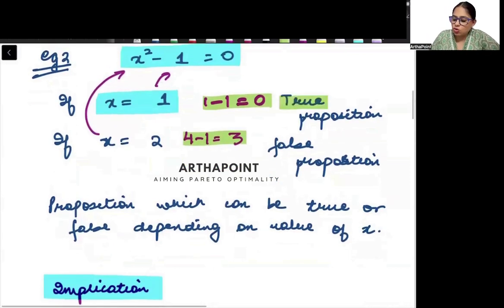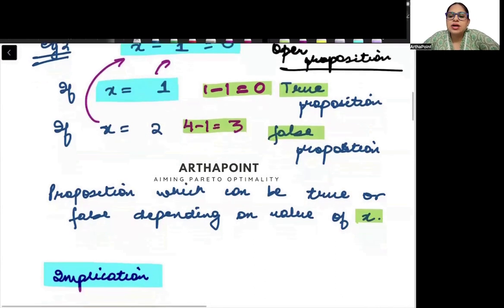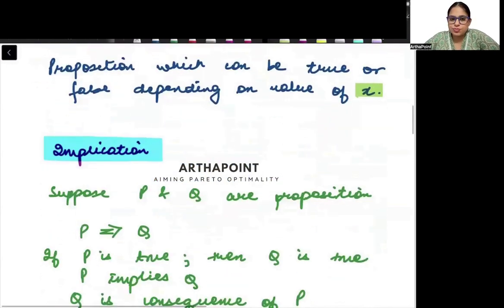The same statement is sometimes true or sometimes false depending on the value of x. Aisi statements, jo kabhi-kabhi true or kabhi-kabhi false ho jati hai, aur jo x ki value per dependent ho jati hai, they become open proposition.